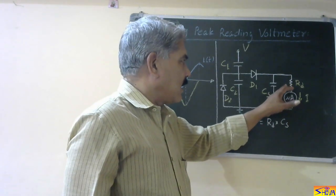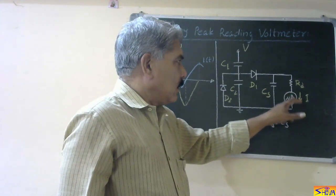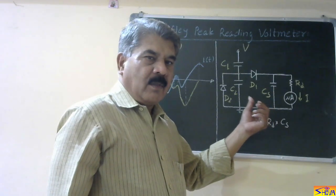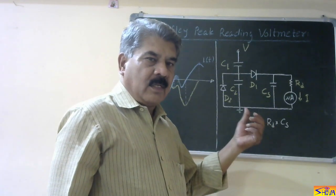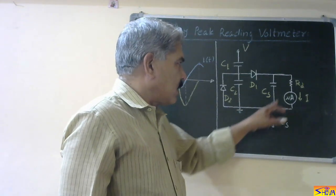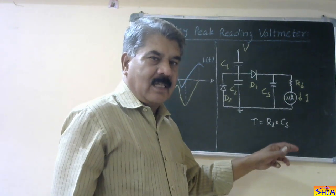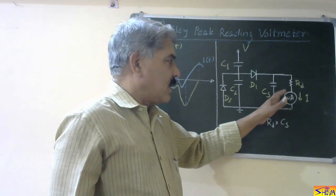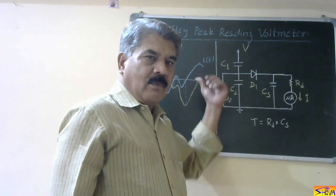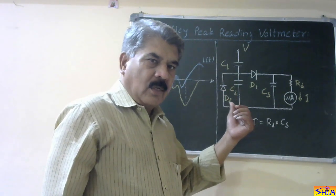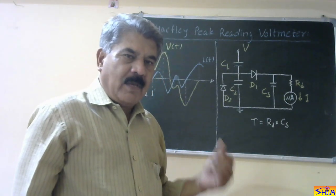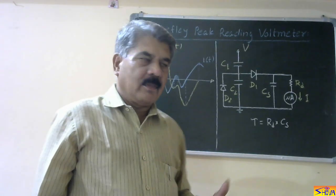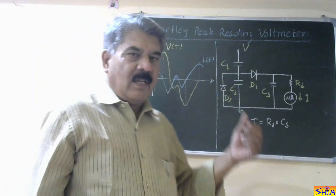Then this capacitor discharges, and the current going through the microammeter is proportional to the peak value of the voltage Vm2, which is the true maxima. The discharge time constant — that is Rd times Cs — is selected very large, approximately in the range of 10 seconds, so that discharging of this capacitor does not take place instantly when the voltage is going to the negative cycle. In this way, we measure the peak value of the voltage when there are more than one maxima. This method is termed the Halfley peak reading voltmeter.